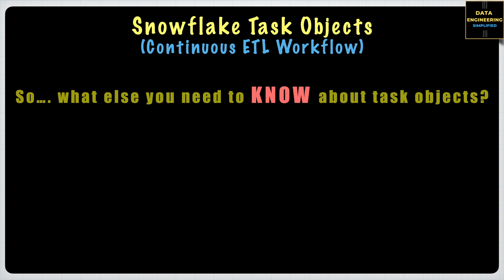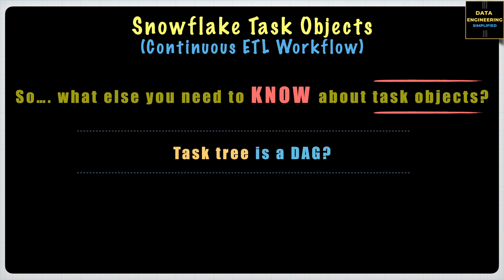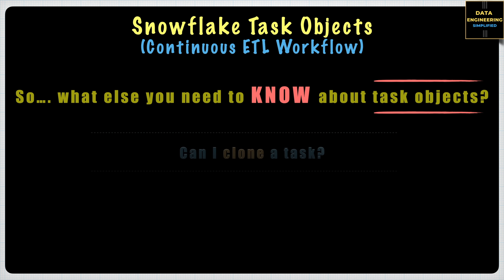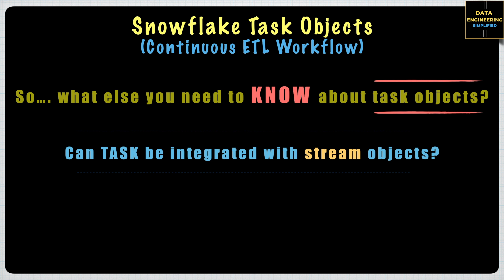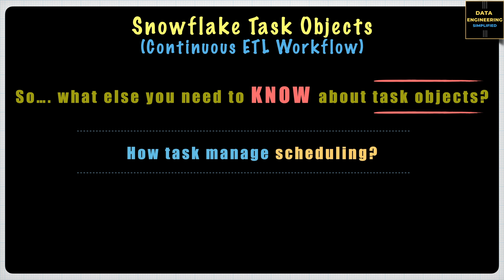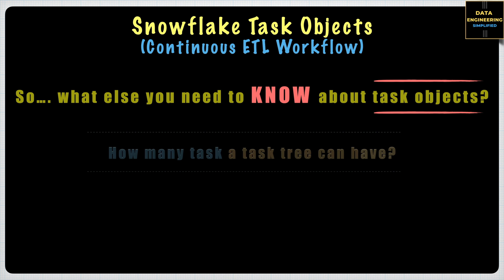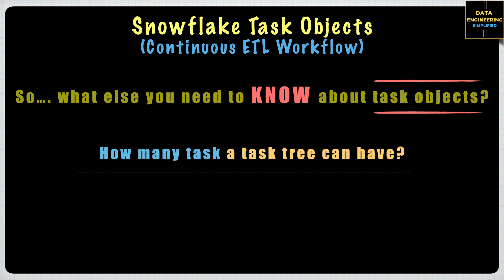So what else do you need to know about task objects and task trees? Is task tree a DAG or something different? Can I clone a task and create a new one? Is task serverless compute or does it need a virtual warehouse? Can a task be integrated with a stream object? How does task manage scheduling? How many tasks can a task tree have? Your Snowflake knowledge is incomplete if you do not know tasks.